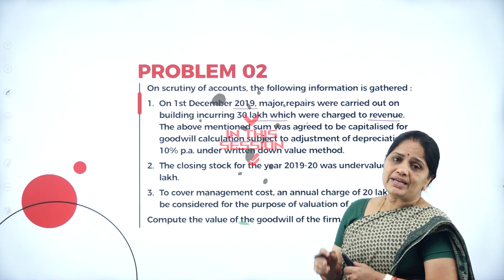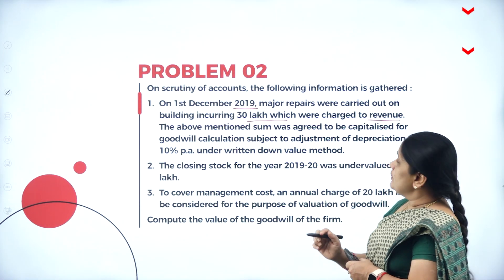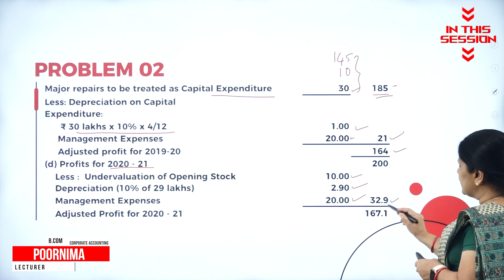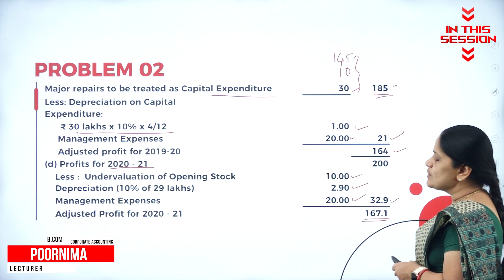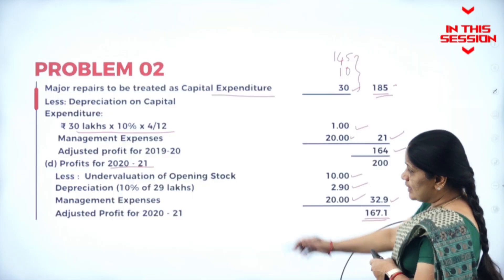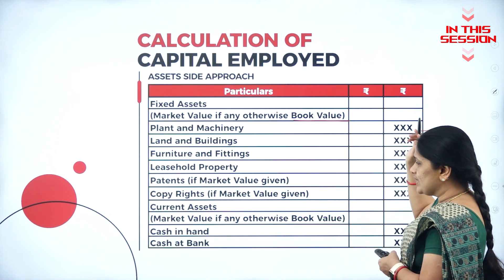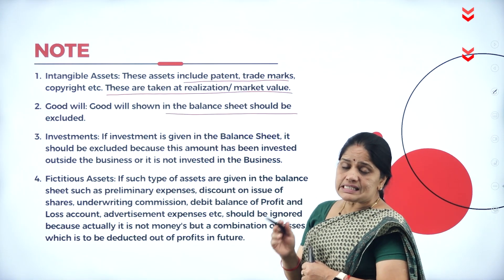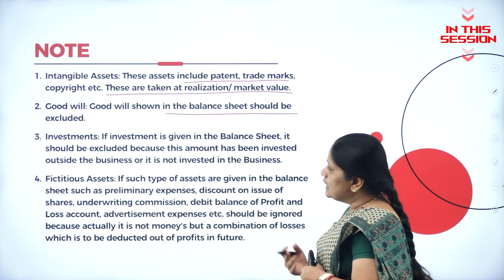Whenever there is any major repair to the building it should not be charged to revenue — it is a capital expenditure. When I add up all this I get 32.9, so adjusted profit is 167.1. If market value is not given then we can always make use of the book value. Whenever we are asked to calculate goodwill, if there is a goodwill shown in the balance sheet, please don't take the goodwill.